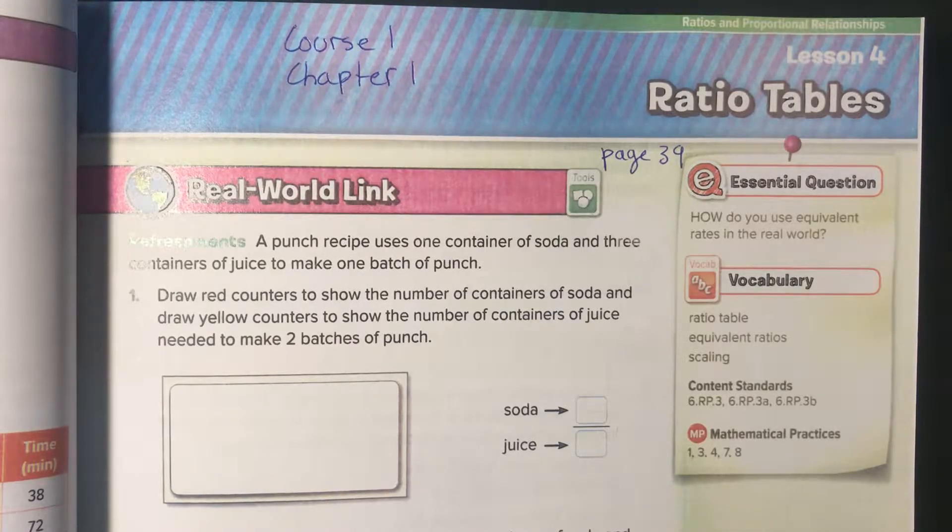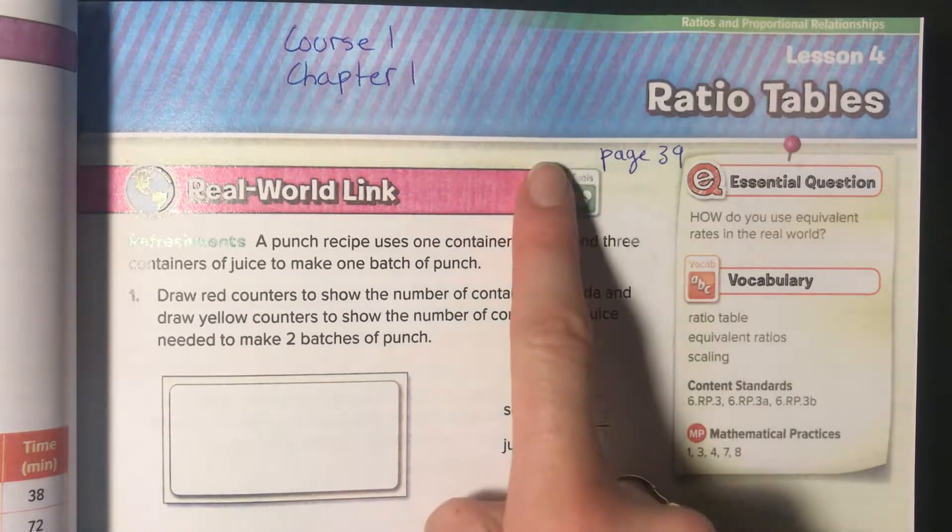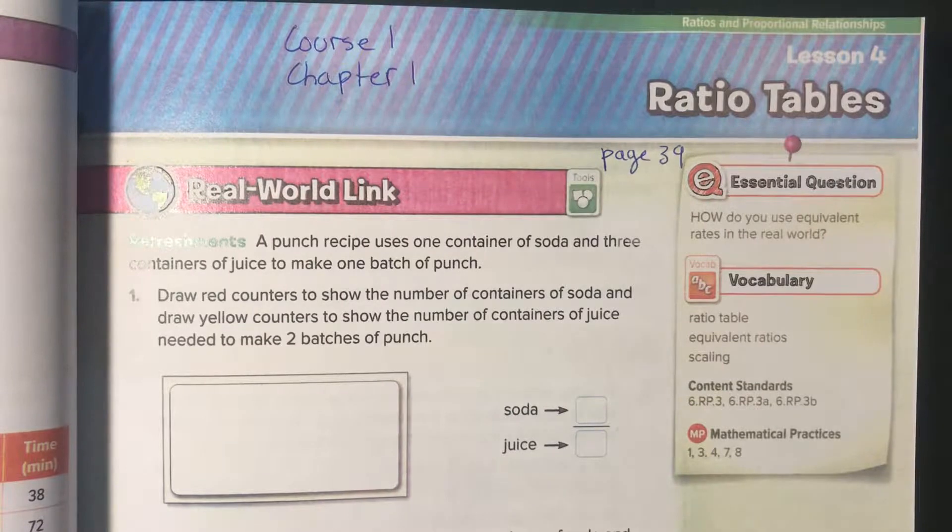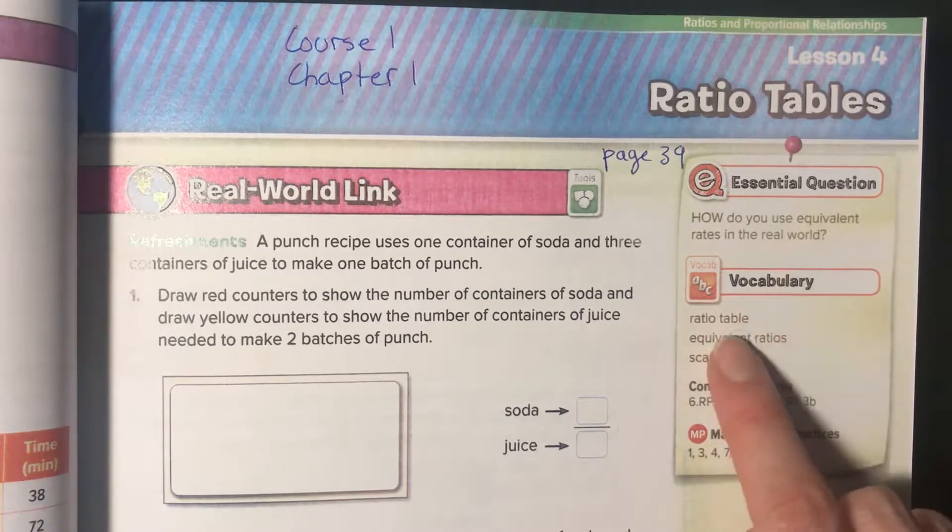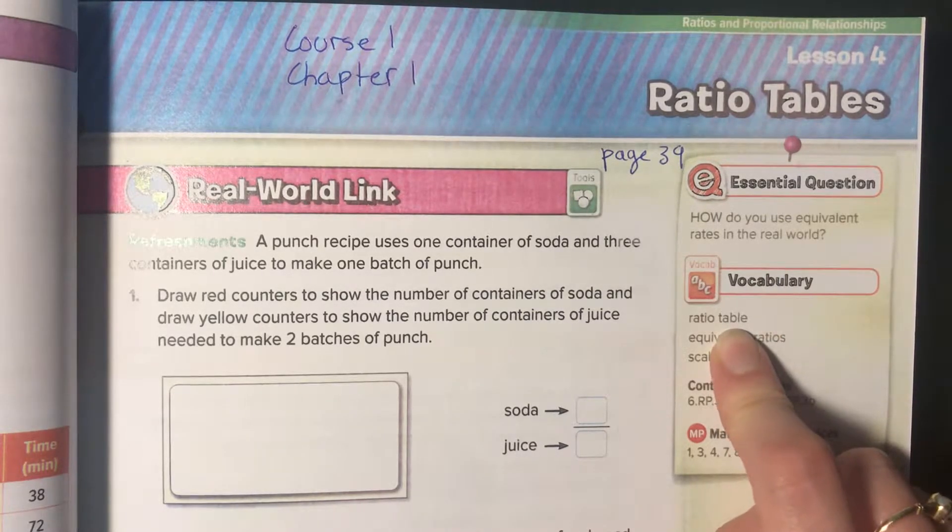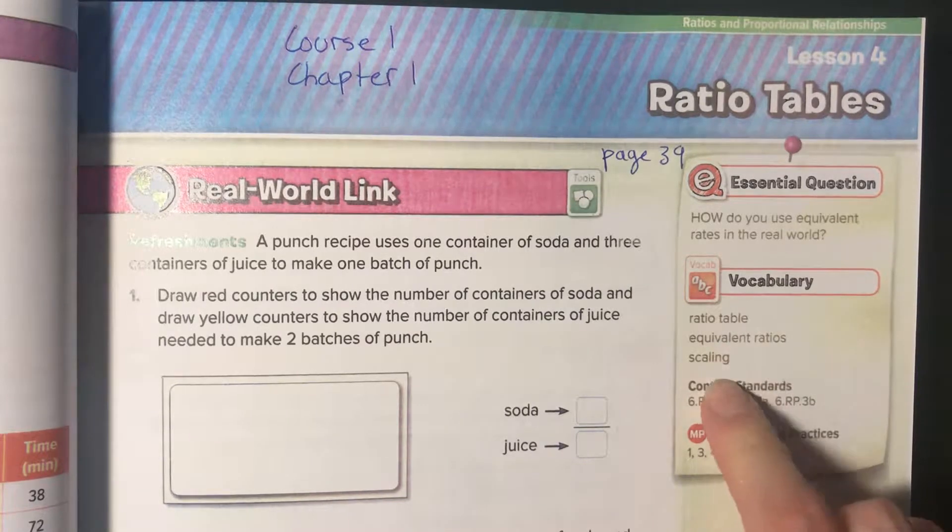Welcome to Chapter 1, Lesson 4. This is page 39 in your book, and ratio tables is the topic of the lesson. The essential question is how do you use equivalent rates in the real world? Vocabulary: ratio table, equivalent ratios, and scaling.